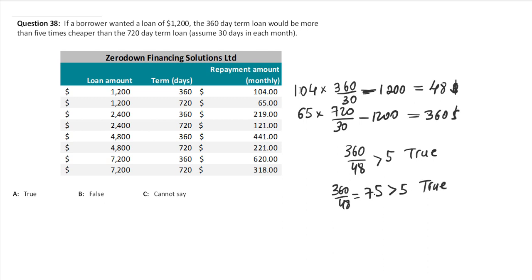In other words, this loan is more than five times cheaper — exactly 7.5 times as cheap as the second option. So if you were to borrow $1,200 over a longer period, two years, it would actually cost you a lot more in terms of interest paid over the life of the loan. And that's it.